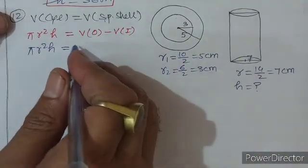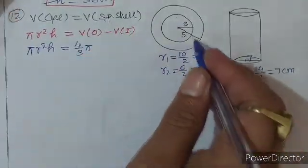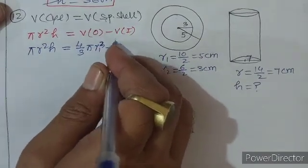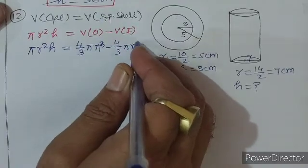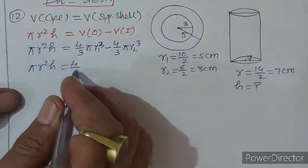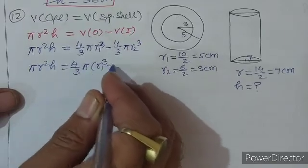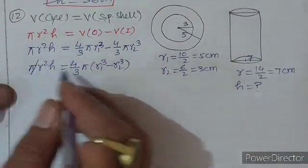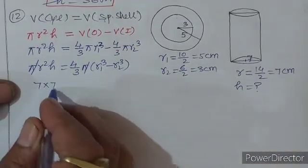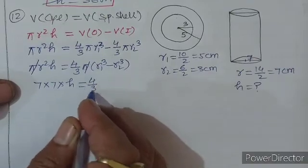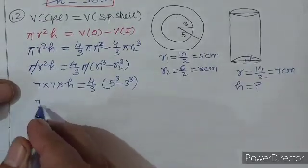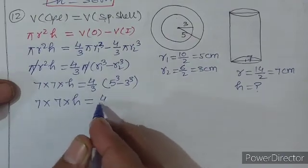π r² h = (4/3)π R1³ − (4/3)π R2³। 4/3 π common लेने पर: π r² h = (4/3)π (R1³ − R2³)। π से π cancel करेंगे। Cylinder की radius = 7। 7 × 7 × h = (4/3) × (5³ − 3³)।